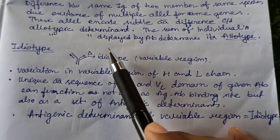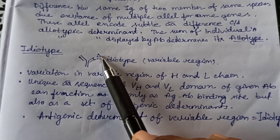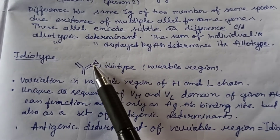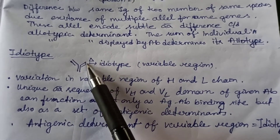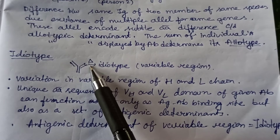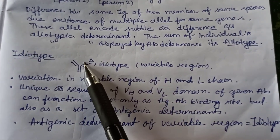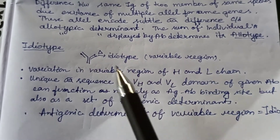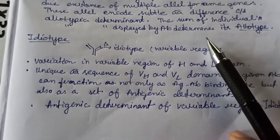In idiotype, the antigen binds to the antigen-binding site of the antibody. This antigen-binding site — the variable region along with the paratope — is known as the idiotype. The idiotype contains the variable region.